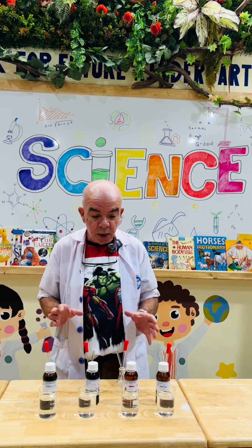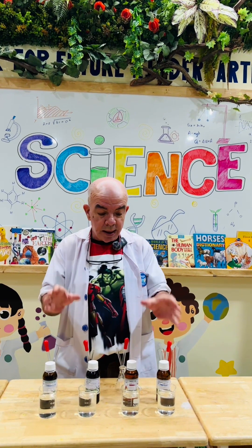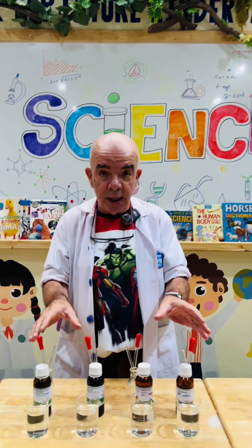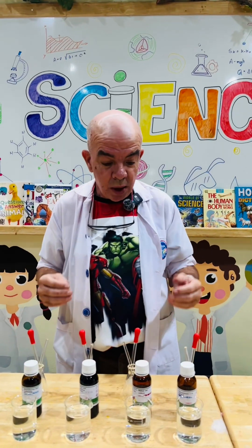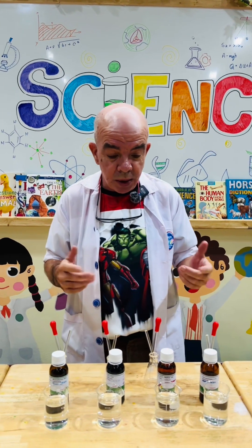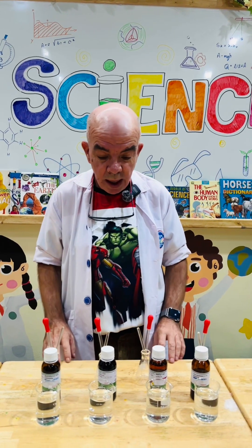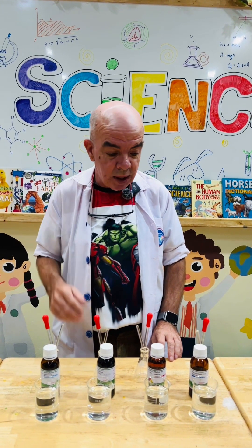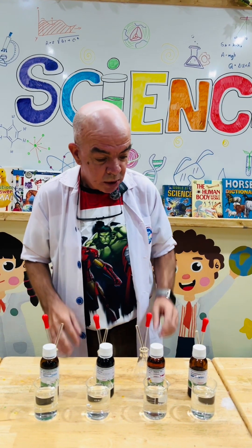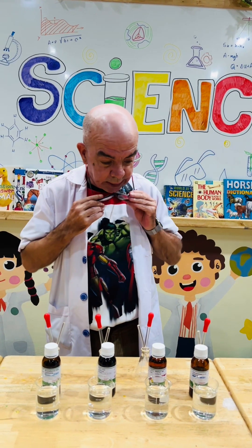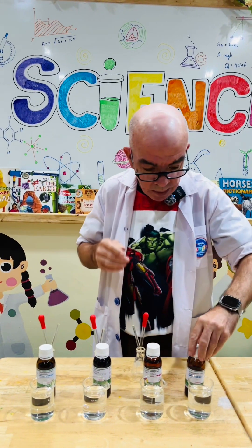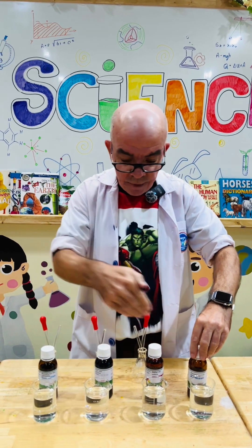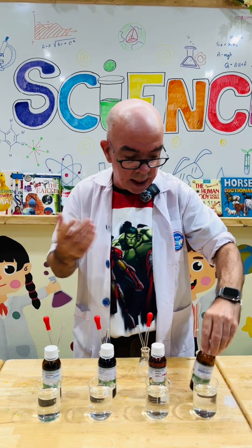Today we are looking at the acid vinegar and we're going to use different colored indicators to show how much acid is in the vinegar. These are all vinegar but we have four different indicators.